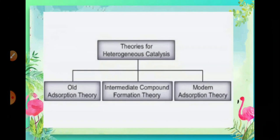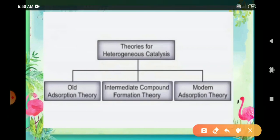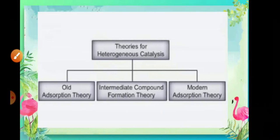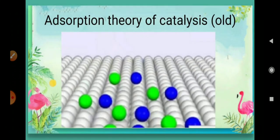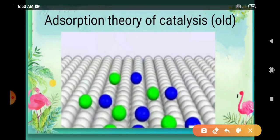The theories of heterogeneous catalysis are: first, the old theory called the adsorption theory; then the intermediate compound formation theory; and lastly, the modern adsorption theory. Let us discuss these theories in detail. The first one, the old adsorption theory, is based on the process of adsorption.